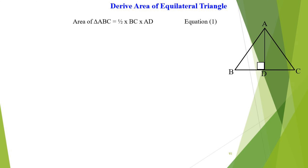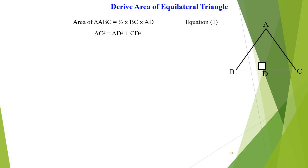The area of triangle ABC equals half times BC times AD. Let's put this as equation number 1. According to the Pythagorean theorem,